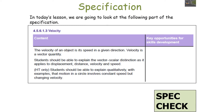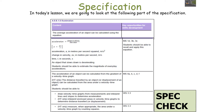We're going to be looking at the following parts of the AQA physics specification: 4.5.6.1.3 velocity and 4.5.6.1.5 acceleration.